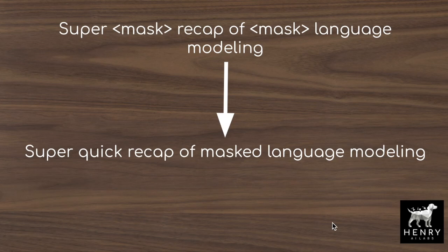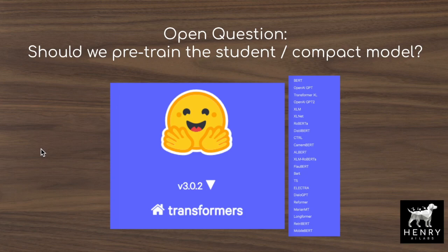For masked language modeling, we randomly mask out tokens in the input and the model is trained to reconstruct the original input. The dataset used for masked language modeling is much more general than something specific to the task — we'd do masked language modeling on, say, all of Wikipedia, before fine-tuning the model on something like IMDB movie reviews.